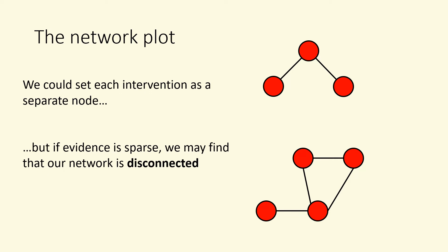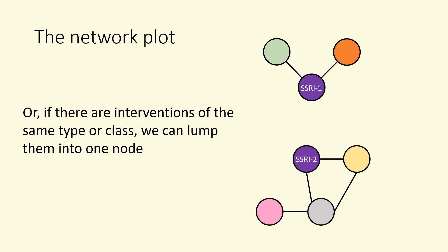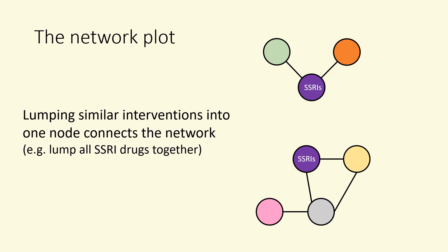Sometimes, setting each intervention as a separate node can mean that the network is disconnected. We can include interventions in the network that are not under consideration — for example, unlicensed or not in use in current practice — if doing so connects the network to enable comparisons between interventions that are of interest. We simply ignore the relative effects for those interventions that would not be used in practice. Alternatively, interventions may be lumped together where we would not expect differential intervention effects, or where we do not have enough evidence to include them in the network otherwise. Lumping two similar interventions into one node gives us a connected network.